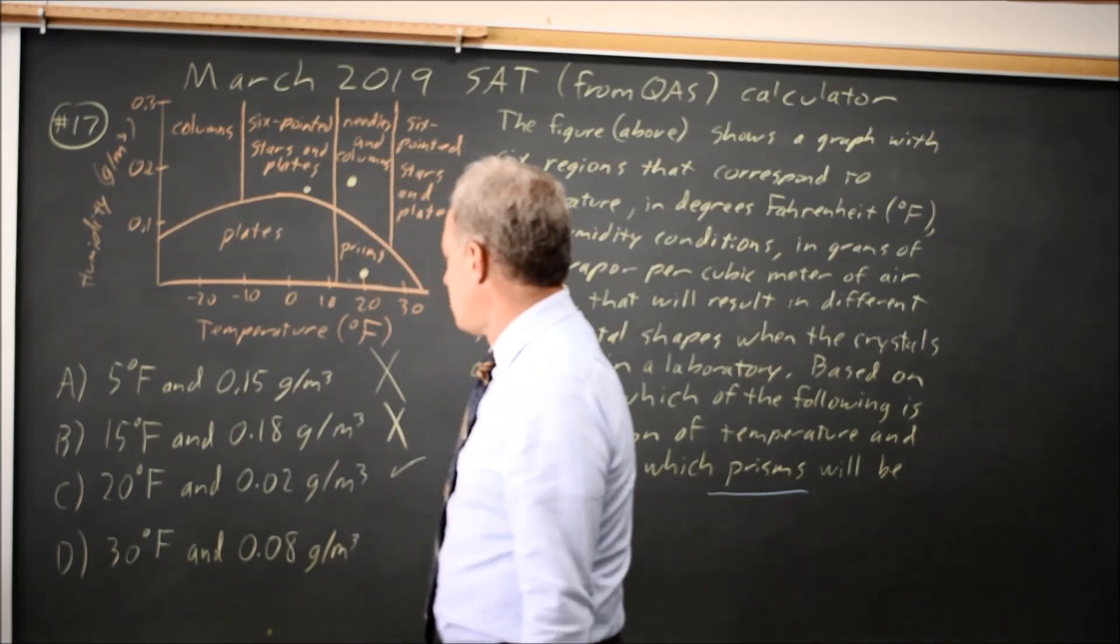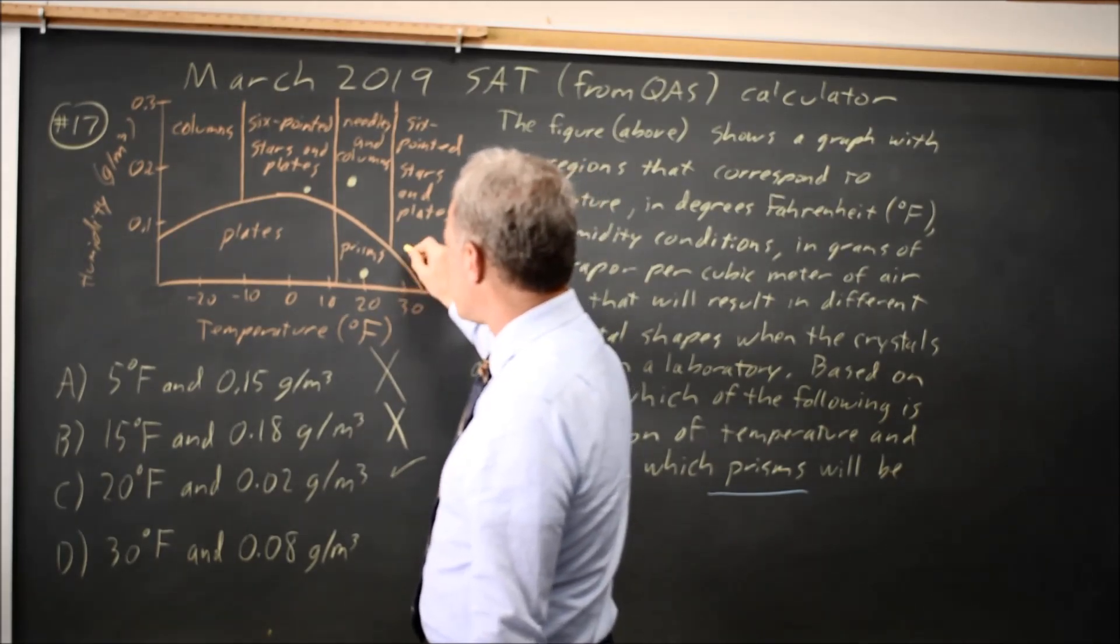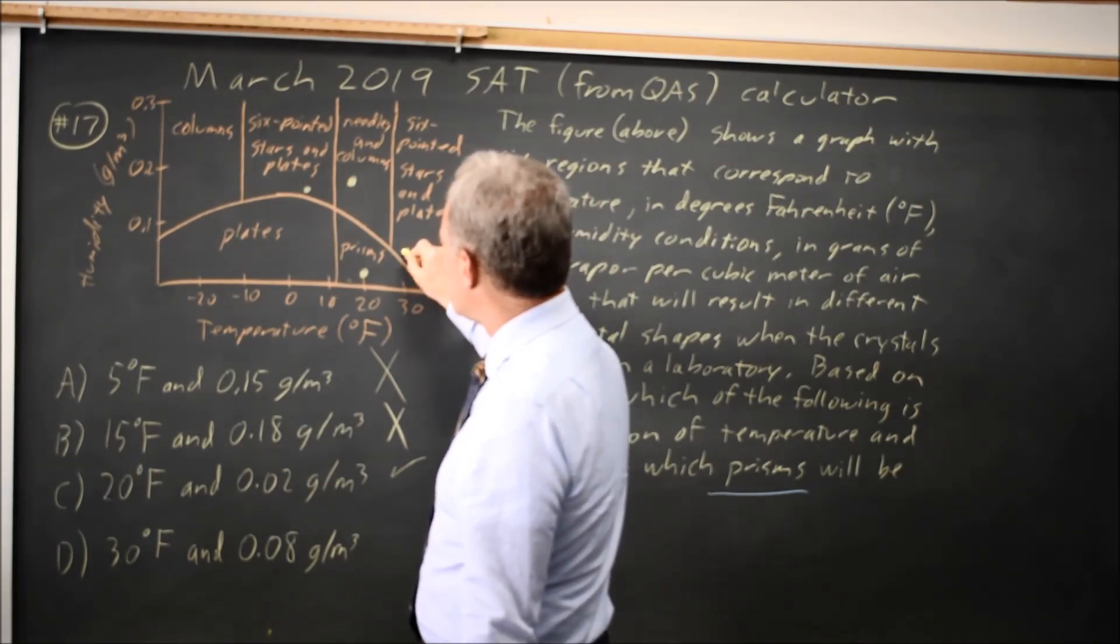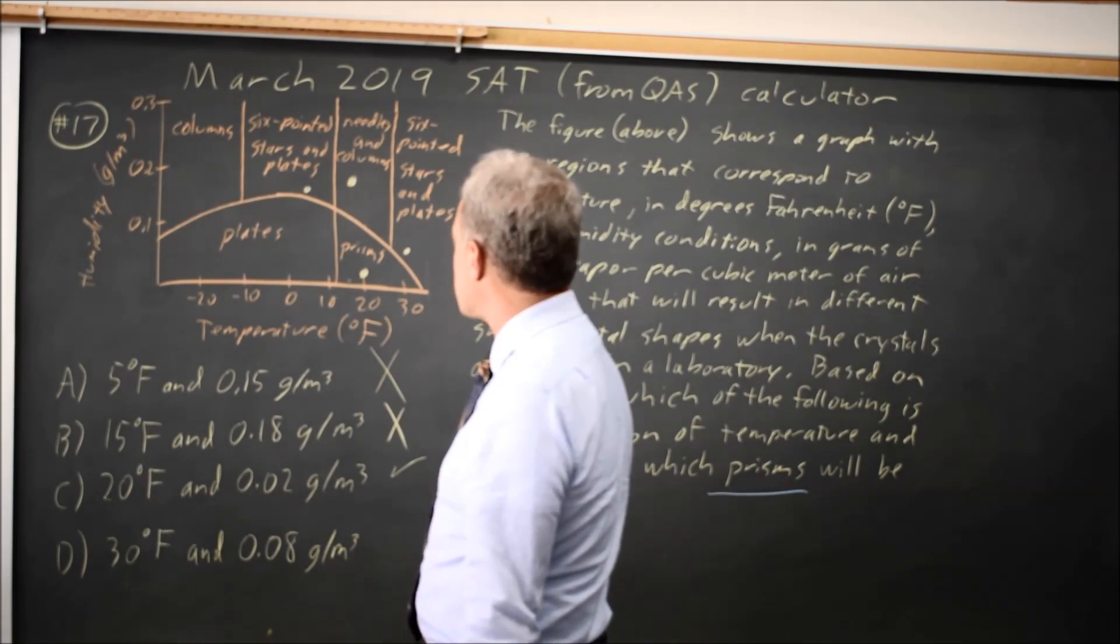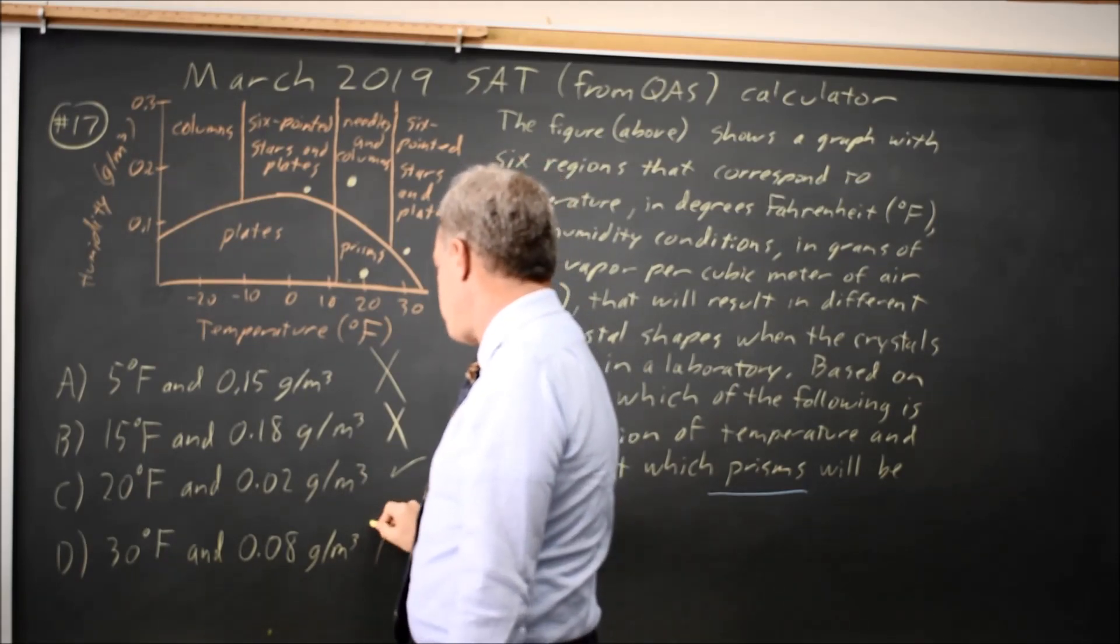And just as a check, 30 degrees and 0.08 is four-fifths of the way up to 0.1, up here in six-pointed stars again. So that would be wrong.